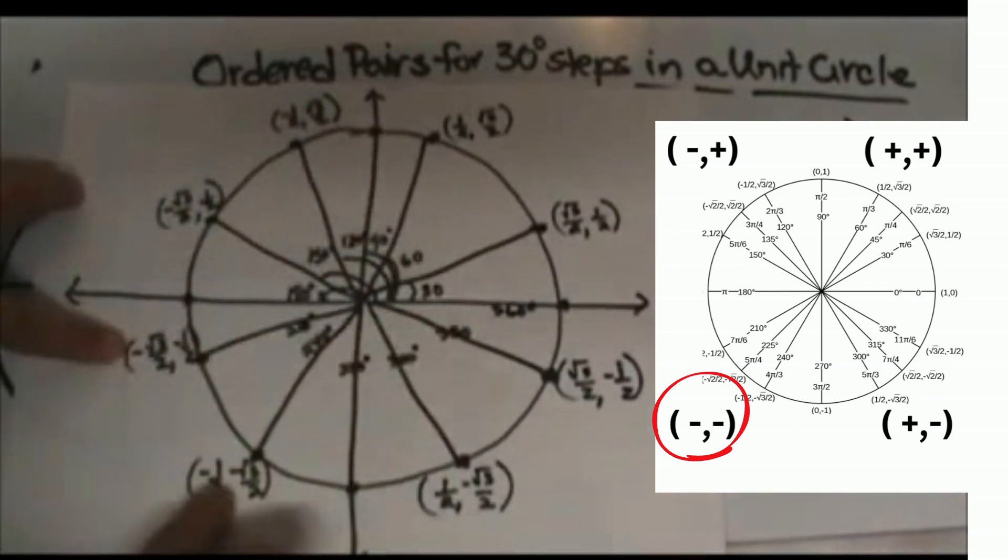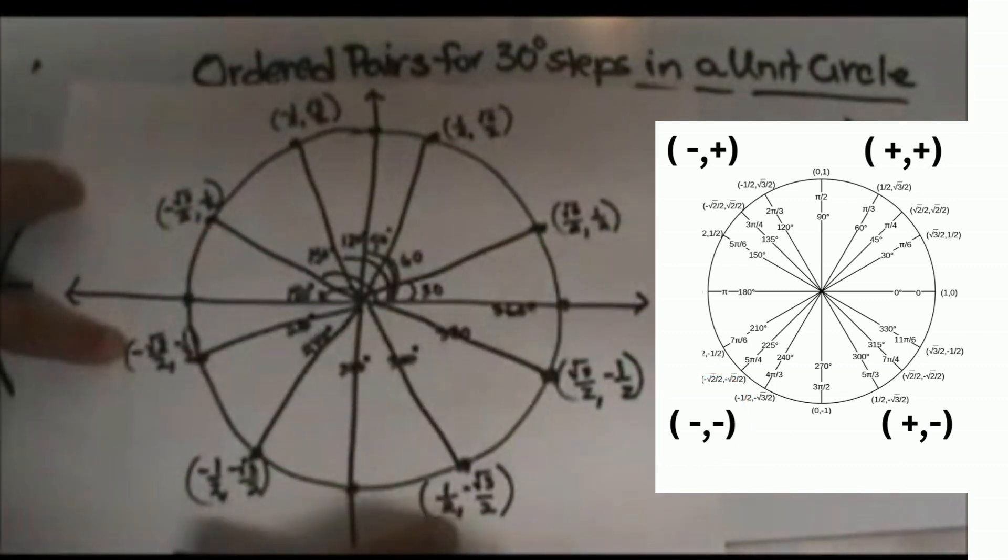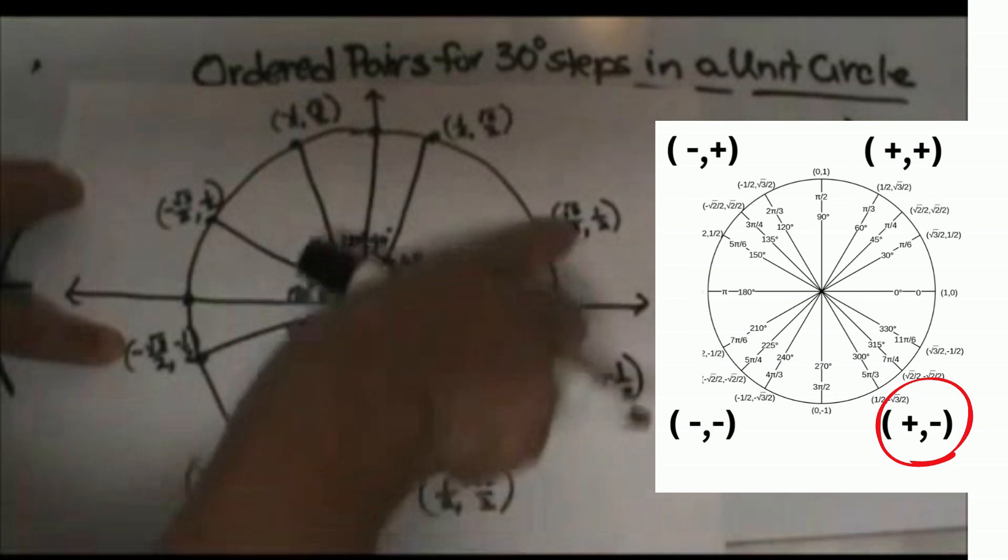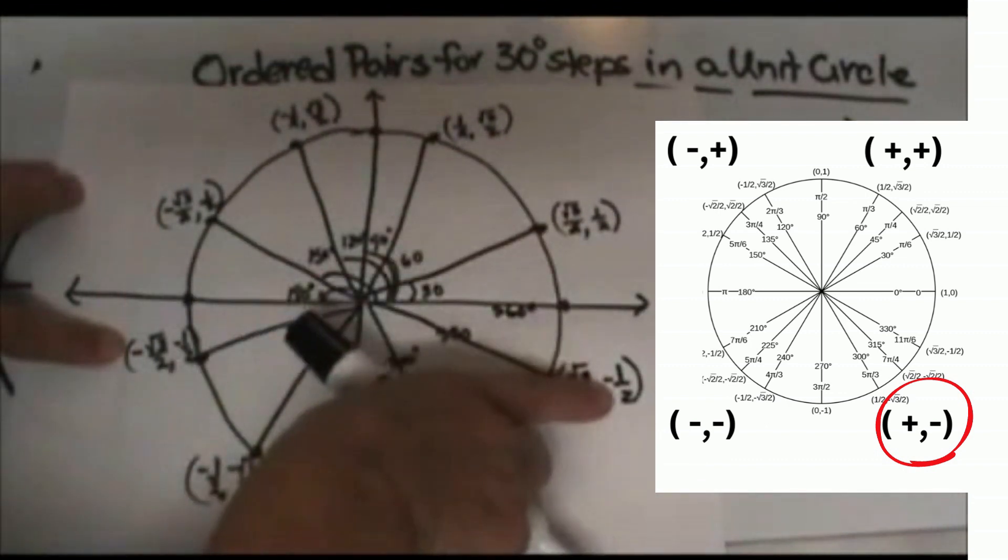And then this would fold down to here, which is (-1/2, -√3/2), and again, this is the mirror image, which is positive then negative for this quadrant. (1/2, -√3/2), and our mirror image here, which is (√3/2, -1/2).